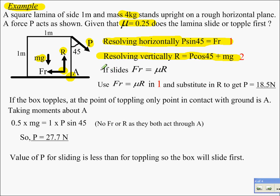And then you look at the situation. You say, if it's going to slide, friction is maximized. Substitute that into these. You know mu, you know the mass of the box, etc. And you should get P is 18.5 newtons.